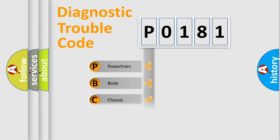Powertrain, Body, Chassis, Network. This distribution is defined in the first character code.